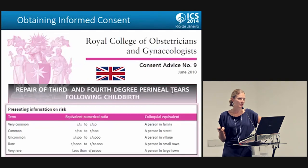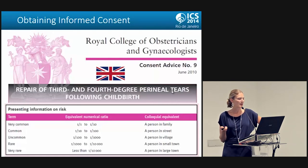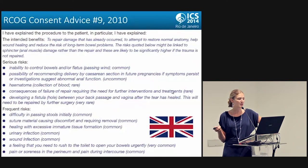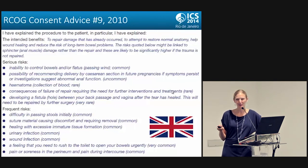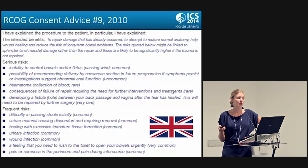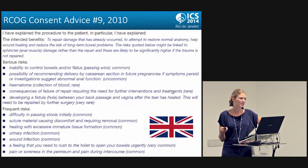Obtaining informed consent is a really important part of the process. ACOG has great resources available online about repair of third and fourth degree perineal tears — available free even if you're not a member — outlining serious and frequent risks. At the time of a vaginal delivery is the one time when you can tell a patient you're probably not going to make her worse. The resources note that the intended benefits are to repair damage that has already occurred, and that risks are likely significantly higher if the trauma is not repaired.